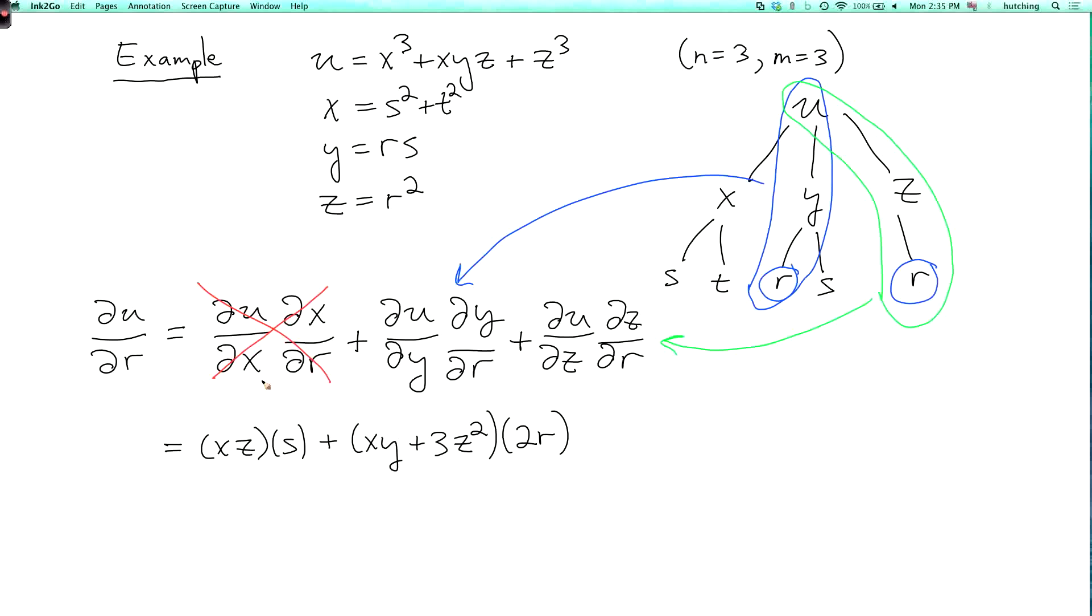And we might want to substitute in for x, y, and z to write this as a function of r, s, and t. Let's not actually do that, but I'll just say you can substitute for x, y, and z to get a function of r, s, and t.